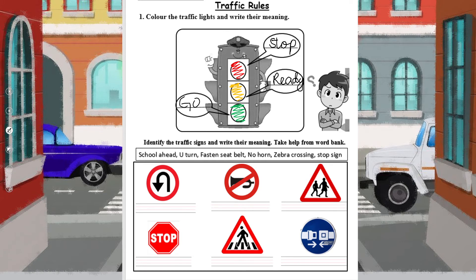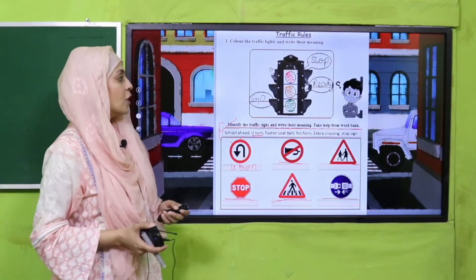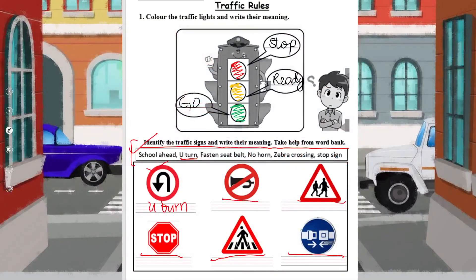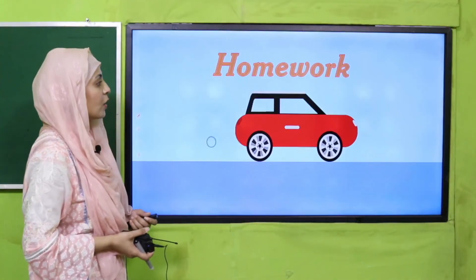Identify the traffic signs and write their meaning with help from the word bank. The first sign is U-turn. Others include: no horn, school ahead, stop, zebra crossing, and fasten your seat belt. Pause the video and quickly finish the worksheet.